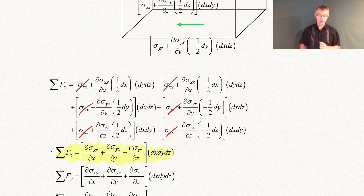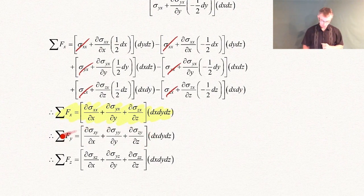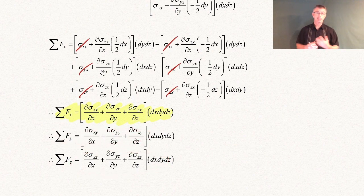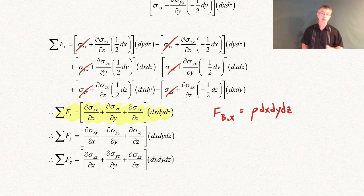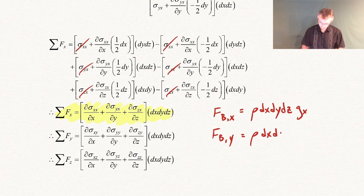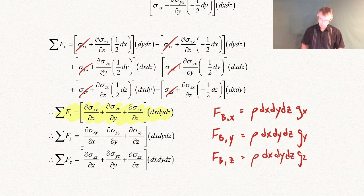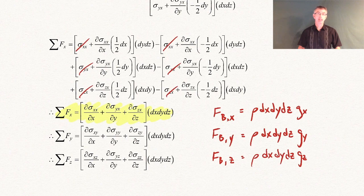You can do the same thing in the y-direction and z-direction to get the corresponding surface force expressions. We also have body forces to account for. The body force in the x-direction is density times volume times gx — that's mass times gravitational acceleration in that direction, and similarly for y and z. We're assuming the only body force is gravity. In general, body forces could also come from electromagnetic effects — the study of fluid motion with electromagnetic effects is called magnetohydrodynamics, or MHD — but we won't get into that here.